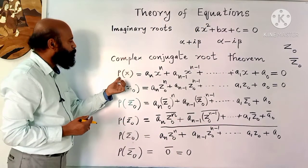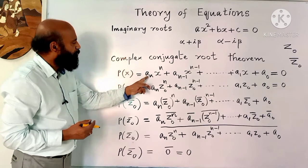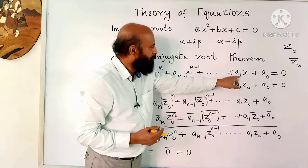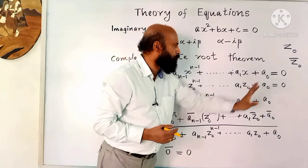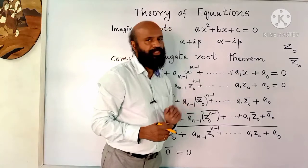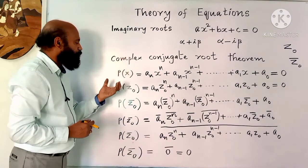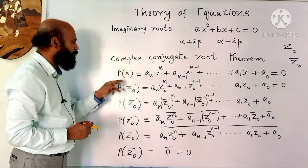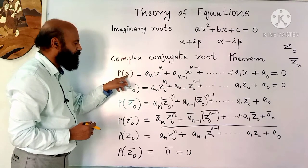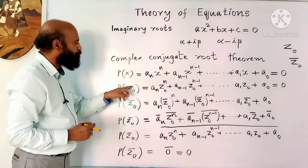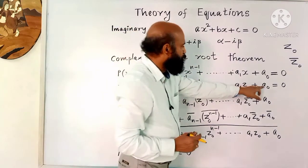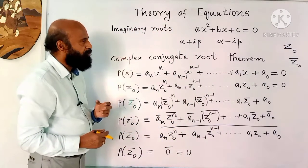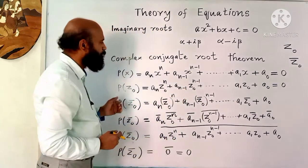Now let us see the proof. Consider the polynomial in x: a_n x^n plus a_{n-1} x^{n-1} and so on, plus a_1 x plus a_0 equals 0. Suppose z0 is a solution for this polynomial equation — z0 is a root. So wherever x appears, we substitute z0, and z0 satisfies this equation. Our aim is to show that its conjugate also will satisfy the equation.